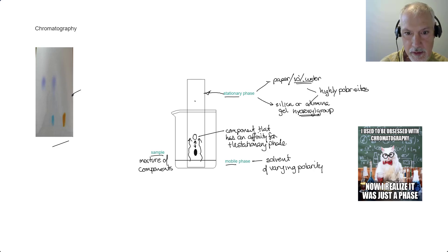There could also be a component that likes our mobile phase, and it would move higher up. So as our solvent, the mobile phase moves up, this particular component moves with the solvent. And as a result, this has an affinity for the mobile phase.